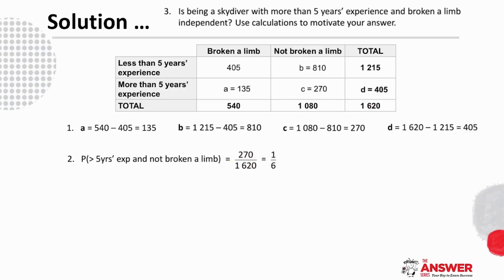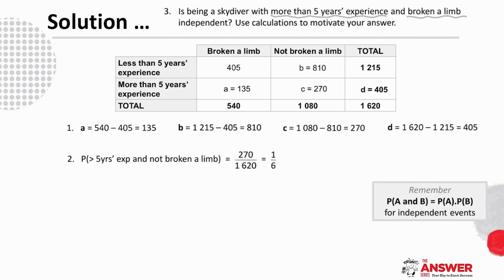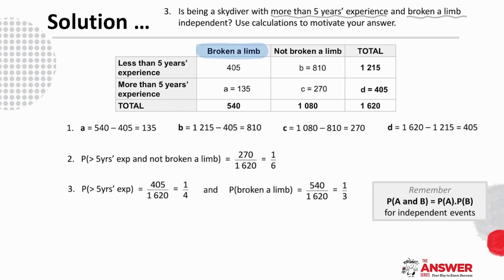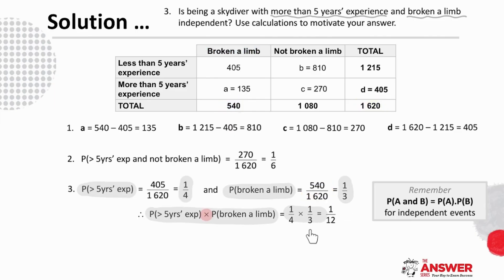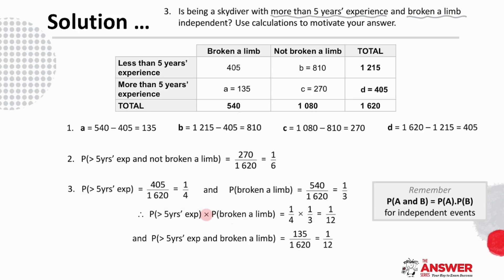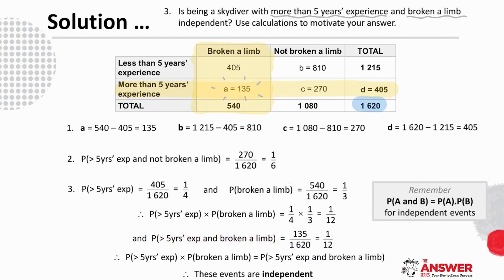Question 3 asks whether these events are independent, so we use the rule for independent events. First, we find the probability of more than 5 years' experience, which is 405 over 1620, simplifying to a quarter. The probability of a broken limb is 540 over 1620, simplifying to a third. Separately, the probability of more than 5 years' experience and a broken limb is 135 over 1620, simplifying to a twelfth. Since one quarter times one third equals one twelfth, these events are independent.